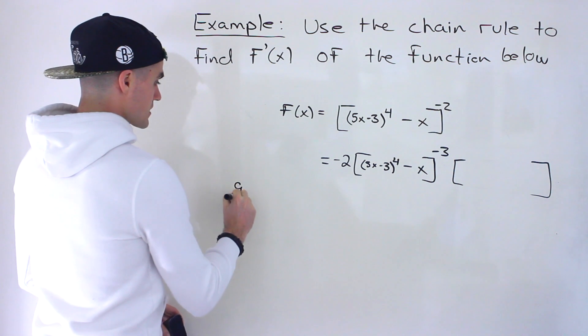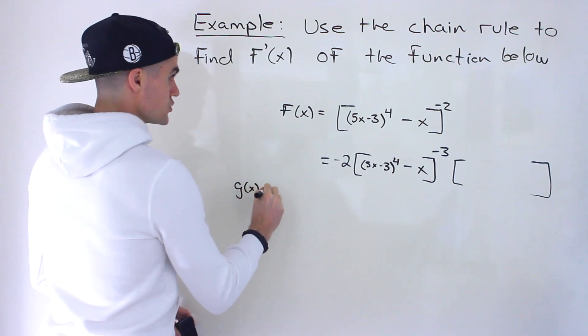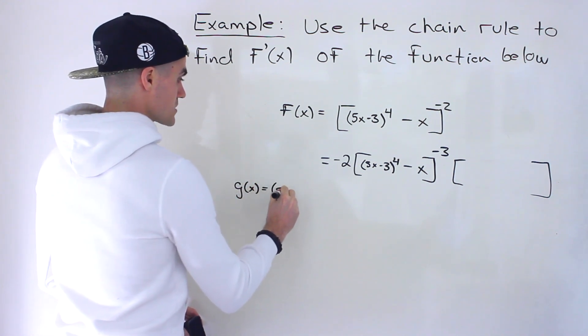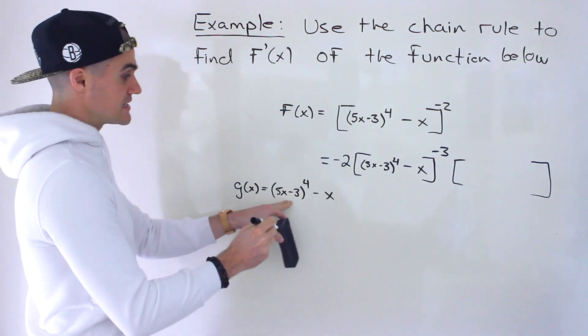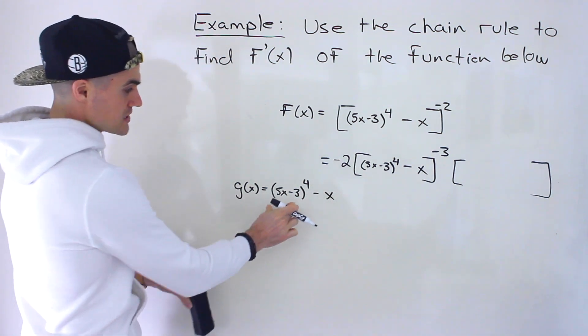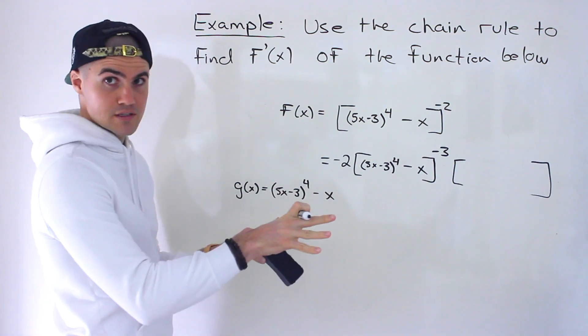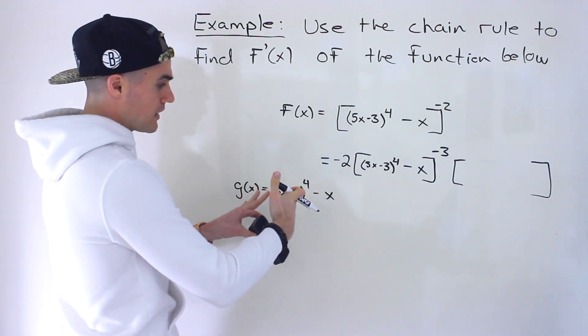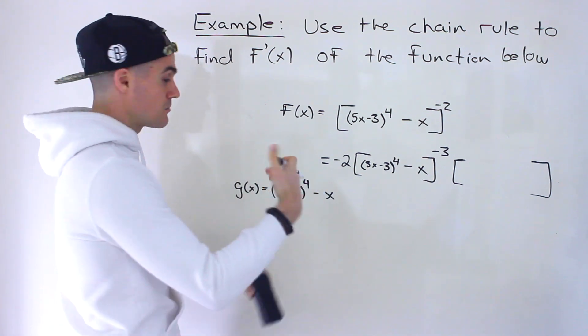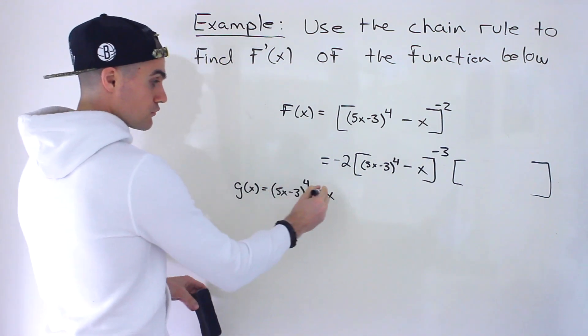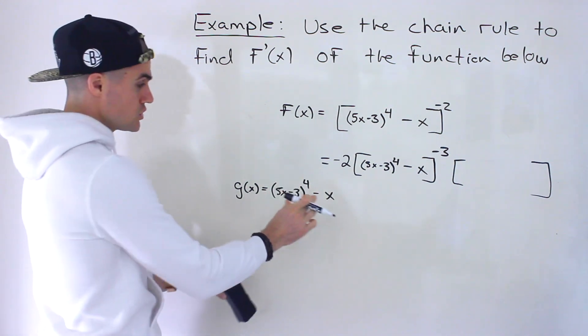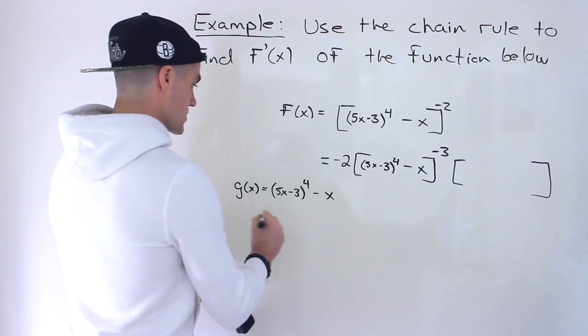So let's call it g(x). We got g(x) = (5x - 3)^4 - x. Notice it's a difference of functions. So we can actually just take the derivative of both of these separately, right? They're not multiplying. If they were, we'd have to use the product rule, but it's just a difference of functions. And whenever you have a difference or an addition of functions, you could just work with each one separately.